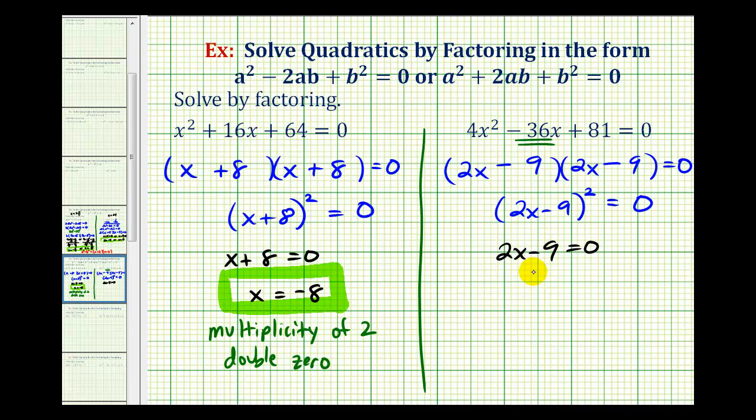So you add 9 to both sides—that would give us 2x = 9—and then divide both sides by two, so our solution is x = 9/2.